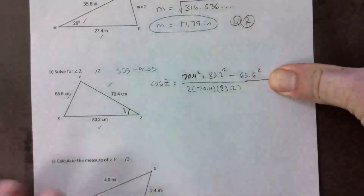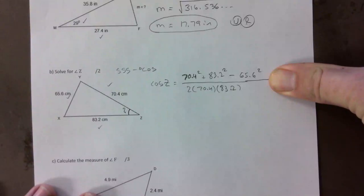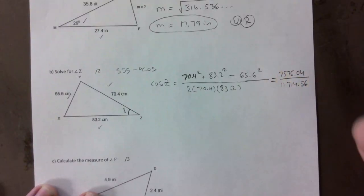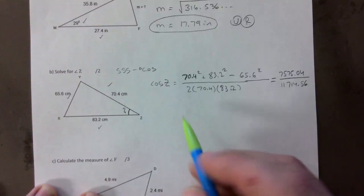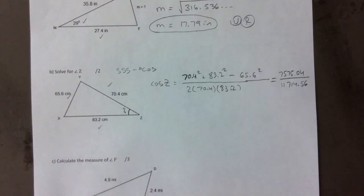And the bottom gives you 11714.56. I would say if you have that part and everything done correctly there, you get a mark already just for choosing cosine law and plugging it in. And then we'll give you another mark for this step in between.